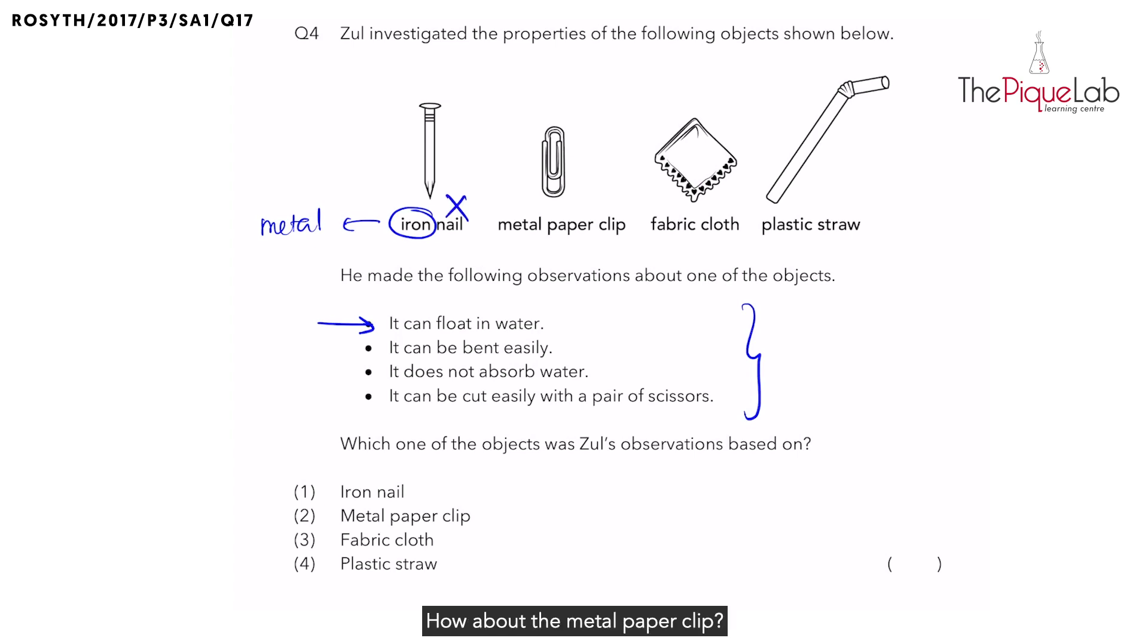How about the metal paper clip? As the name itself says, it's metal. And like we said earlier, metal sinks in water, not float. So the metal paper clip is not the object we are looking for also. So let's cross that out too.